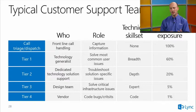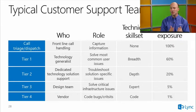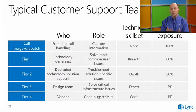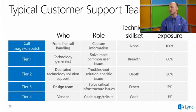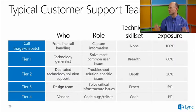Tier two gets about 20% of calls and is technology-specific and deep in a specific technology rather than broad across many. Once you get into tier three, we're working at design or architectural teams who solve critical infrastructure issues at an expert level, but should only be seeing about 5% of issues. Of those, only a small percentage should be escalated to vendors — Microsoft or third-party — as product issues, code bugs, or critical situations.